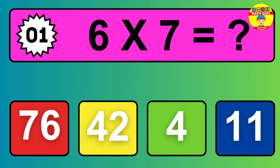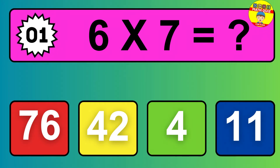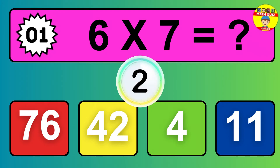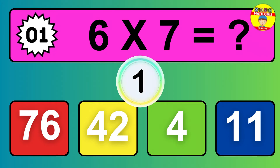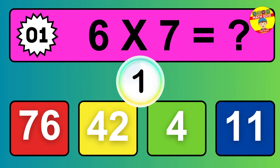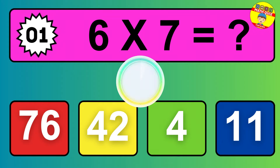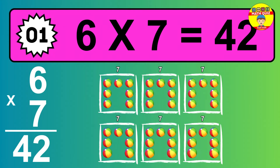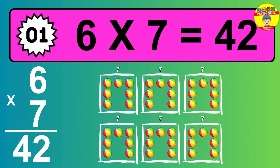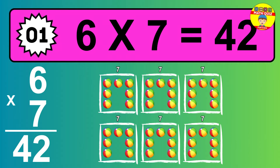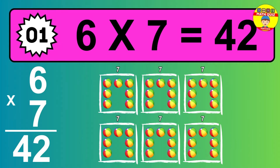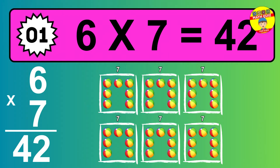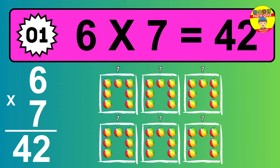Question one. Six times seven equals what? The answer is six times seven is 42. To calculate, we have six groups with seven balls each one. So how many balls do we have? 42 balls.